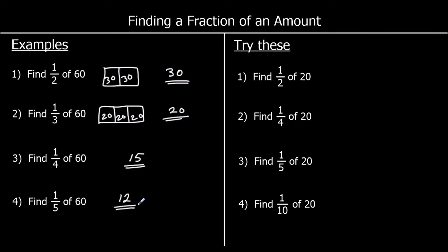Okay, four for you to try — give them a go. Question 1 is find half of 20. 20 split into two bits, that would be 10 each. So one half is 10. Find one quarter of 20. 20 split into four bits, that would be five each. So each quarter is worth five. Five fours make 20.